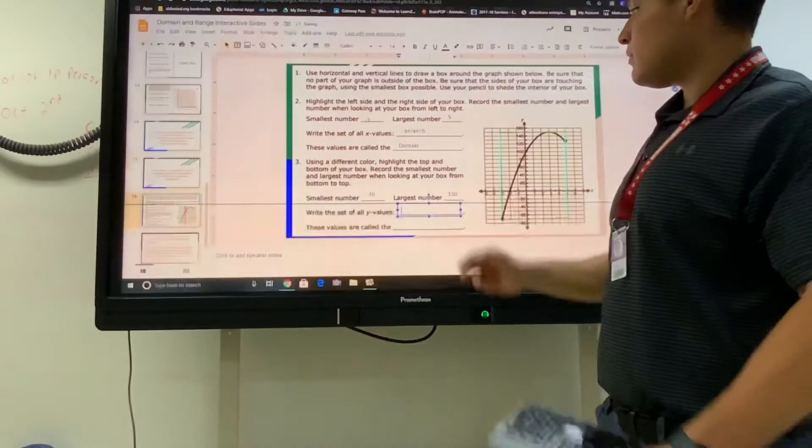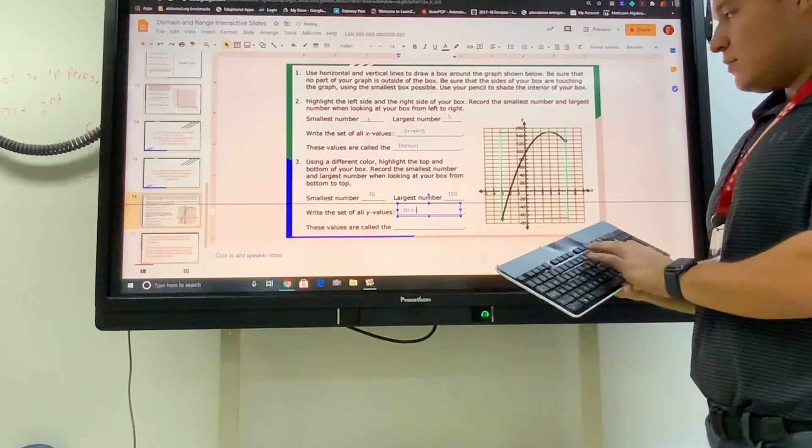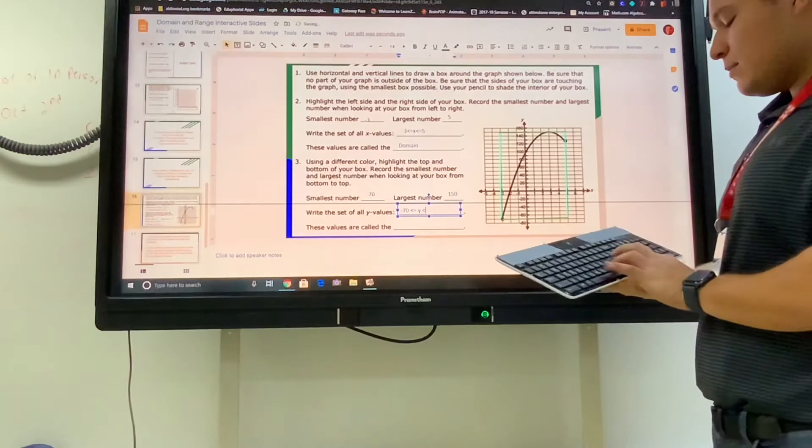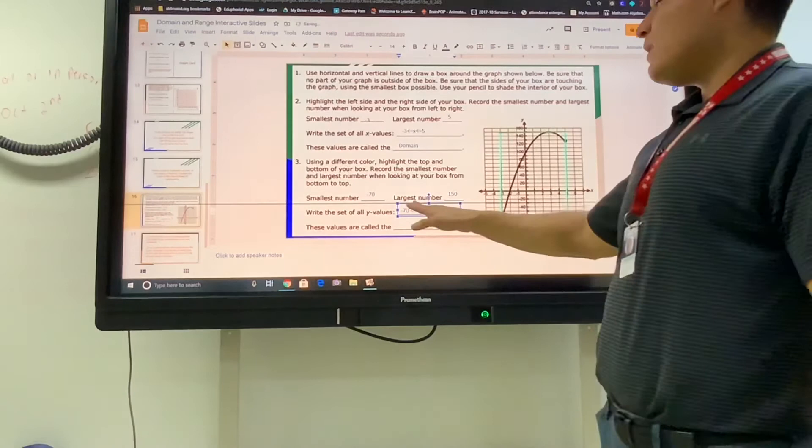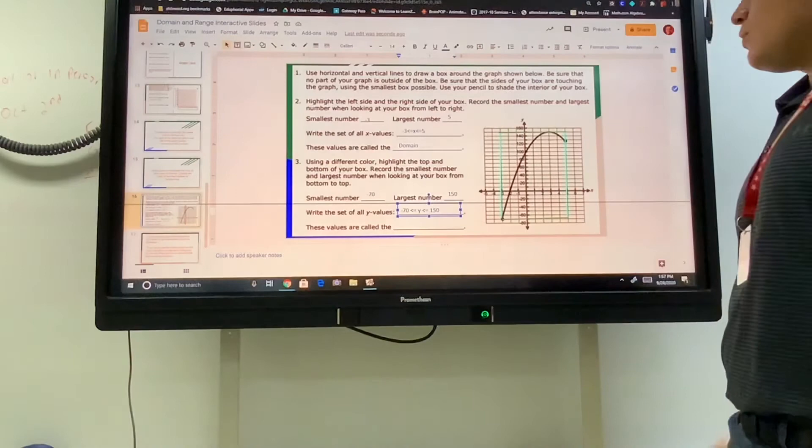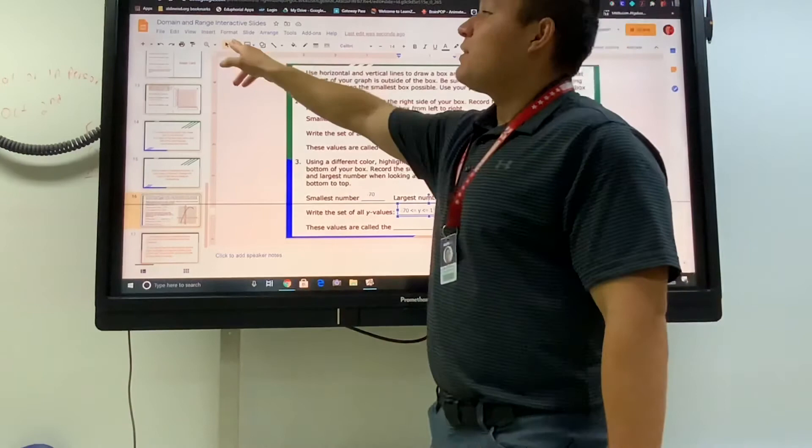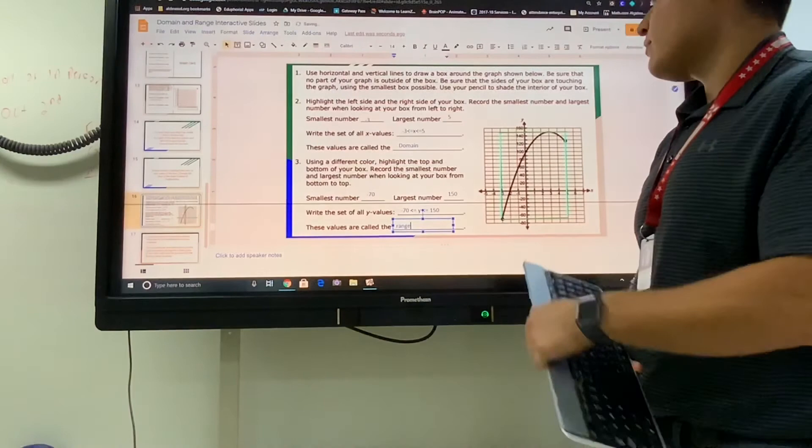Then we're going to take these two numbers, the smallest y and the greatest y, and we're going to put them as an inequality. The smallest y was negative 70, and every other y was greater than that. But there were no y's that were bigger than 150. All of the y's need to be bigger than negative 70 but less than 150 or equal to. A set of all of the y's on the graph is called the range.